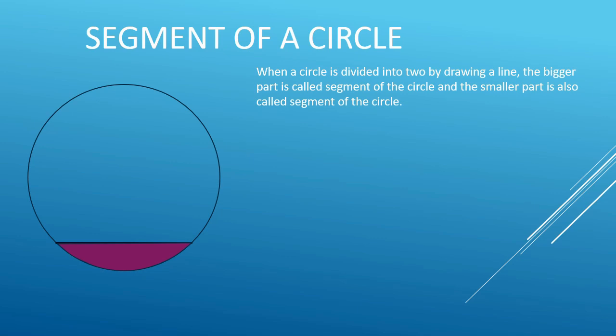When a circle is divided into two parts by drawing a line, the bigger part is called a segment of a circle and the smaller part is also called a segment of a circle. Let's look at the area of the segment of a circle.